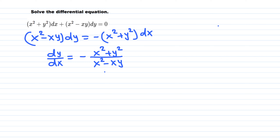This differential equation is not separable from the very beginning because we have an xy term and x squared dy — we don't know how to integrate x squared in terms of dy. So it is not separable. It is first order. Looking at the degrees on the top and bottom: both are degree 2, so this differential equation is homogeneous.